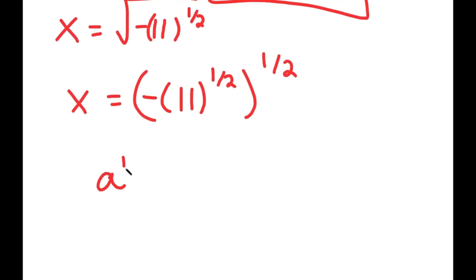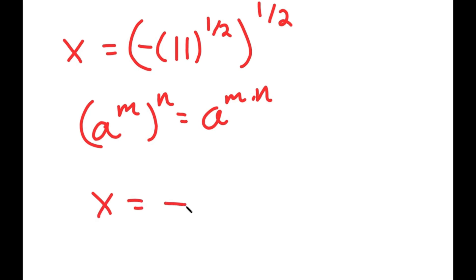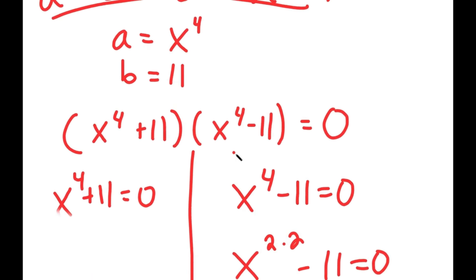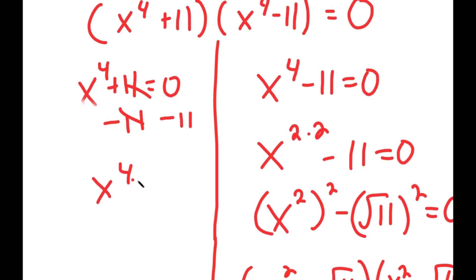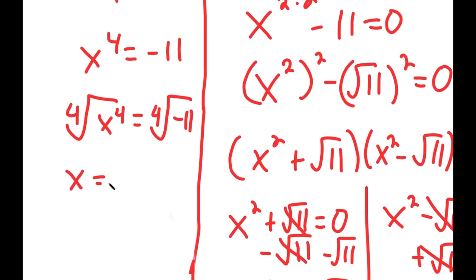Using the property that A to the power of M to the power of N equals A to the power of M times N, one half times one half is one fourth, so X equals negative 11 to the power of one fourth. Now going back to X to the power of four plus 11 equals zero, I subtract 11 on both sides to get X to the power of four equals negative 11. Taking the fourth root on both sides gives X equals positive or negative the fourth root of negative 11.